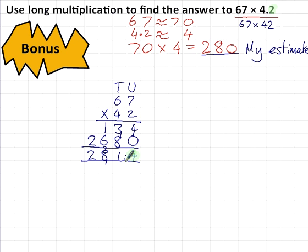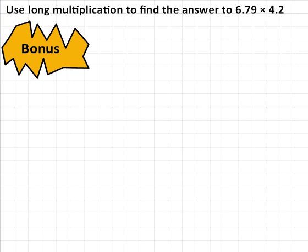281.4. Now, that makes a whole lot more sense if I compare it to the estimate. We can see that 281.4 is quite close to our estimate, 280, and therefore it's almost certainly correct. Okay, let's go on to the second example.